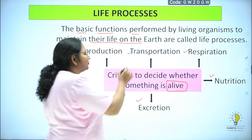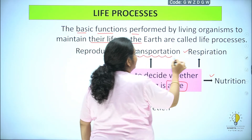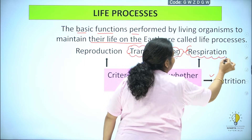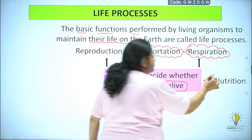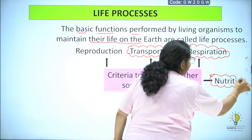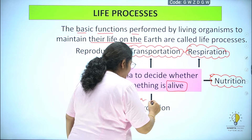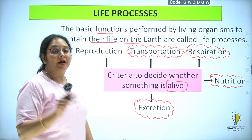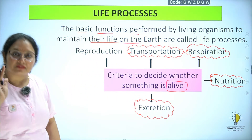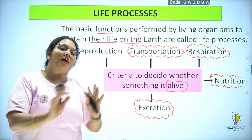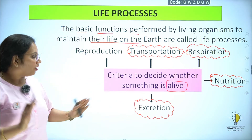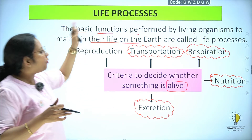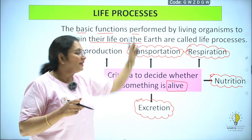यह जो चार criteria हैं — transportation, respiration, nutrition and excretion — यह चार important life processes हैं। इनके बिना हमारा जीवन नहीं चल सकता। इनमें से अगर एक भी काम करने से मना कर दे, तो हमारी life दिक्कत में आ सकती है। These four are important life processes, गाड़ी के चार पहिये।